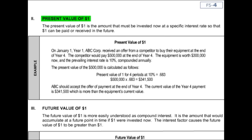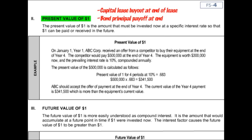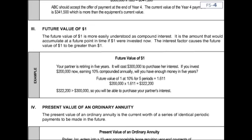Let's go back to the materials. This particular item is going to be very useful for two areas, so let's make some bullet points to the right-hand side of the present value of one table. First bullet point: capital lease buyout at end of lease — this table will be used for that last bargain purchase. Second bullet point: this table would be used for bond principal payoff at end. So this table is useful in two circumstances: one for leases, for the bargain buyout, and for bonds, for the principal payoff a number of years from now.